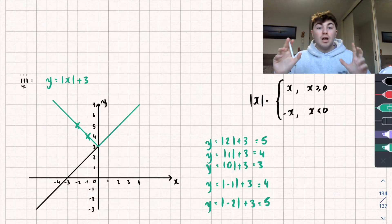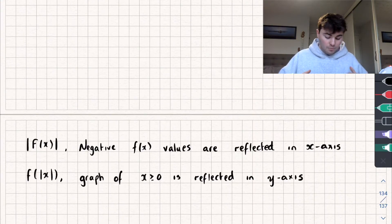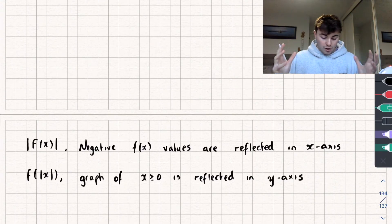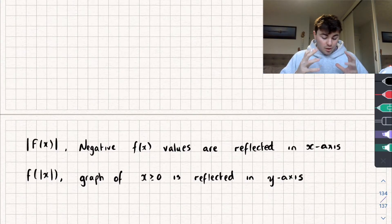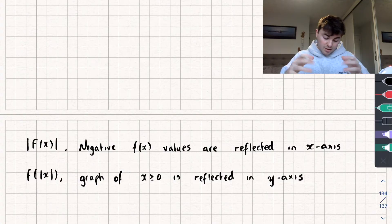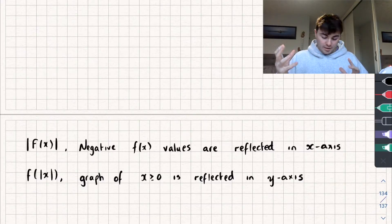We can generalise these rules like so. If we put the modulus around our whole function, the negative f of x values are reflected in the x-axis. And if we look at f of the modulus of x, then the graph for x greater than or equal to 0 is reflected in the y-axis.